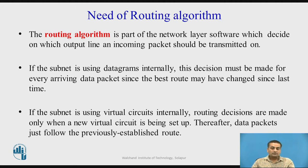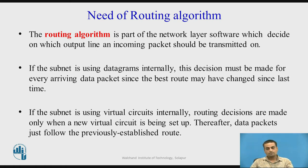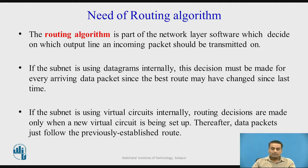The forwarding decision is made for every packet because the best route may have changed since the last packet was forwarded. If the network uses virtual circuits internally, routing decisions are made only when a new virtual circuit is being set up. Once the circuit is set up, all subsequent packets are simply forwarded on the previously established route.